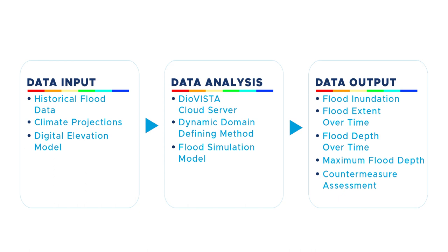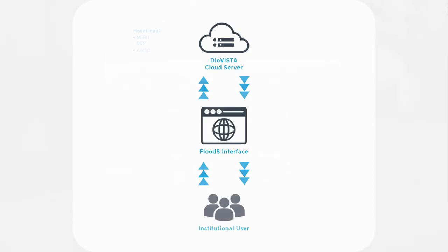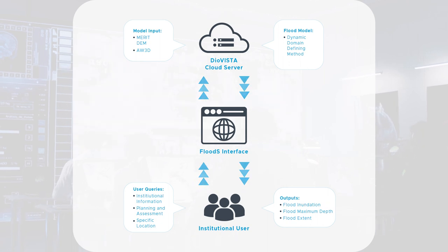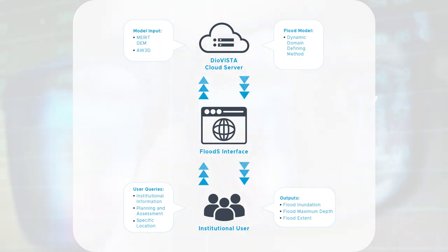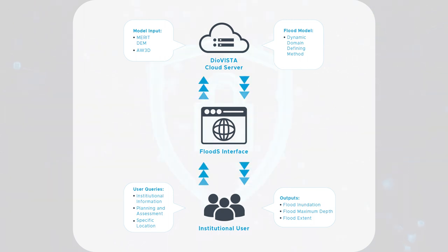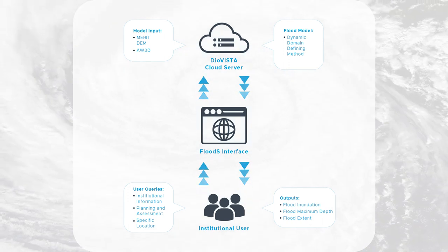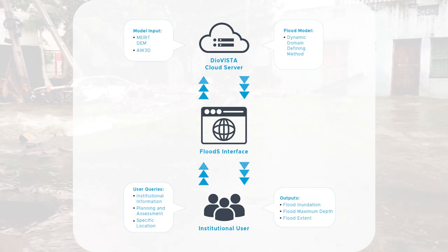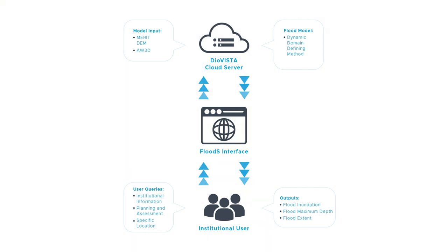but also ensure their long-term resilience in the face of future challenges. Flood S is a web platform taking advantage of the availability of data from modern technology, for example satellite technology. By integrating data-driven decision-making into flood management strategies, the Flood S tool reinforces the importance of utilizing reliable information to make informed choices that prioritize the safety and well-being of all those affected by floods. Flood S allows users to provide extreme climate scenarios, for example flooding, based on institutional information and experiences in the Flood S interface. The Flood S will then send the user's queries to the server where the DOVISTA flood simulator will simulate the information provided.